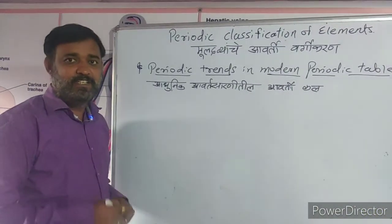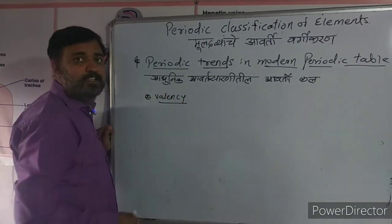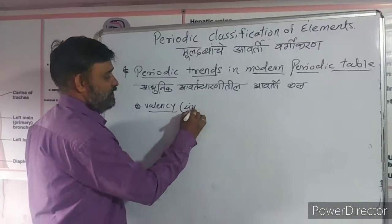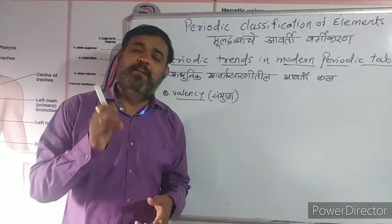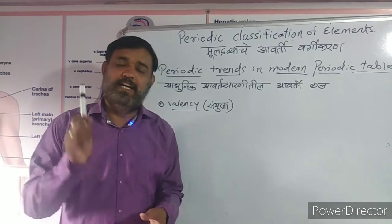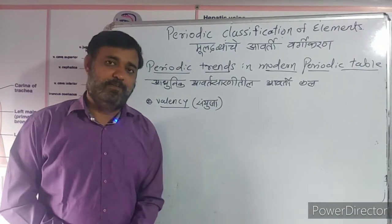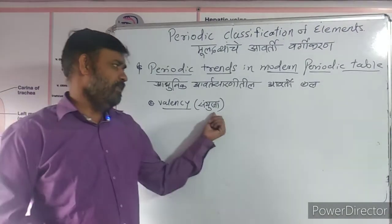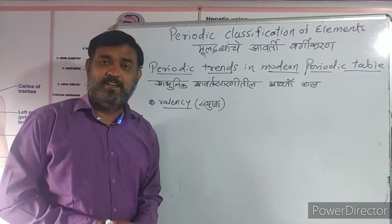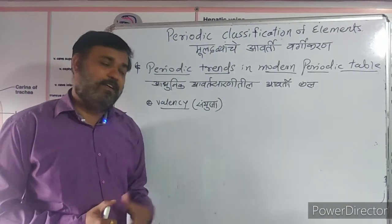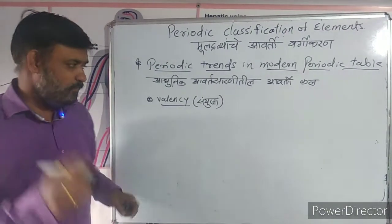In the modern periodic table, we have to learn three trends. The first trend is valency. What is valency? We learned in a previous standard that the number of electrons in the last orbit of an atom is called its valency, because it represents the combining capacity of that element.